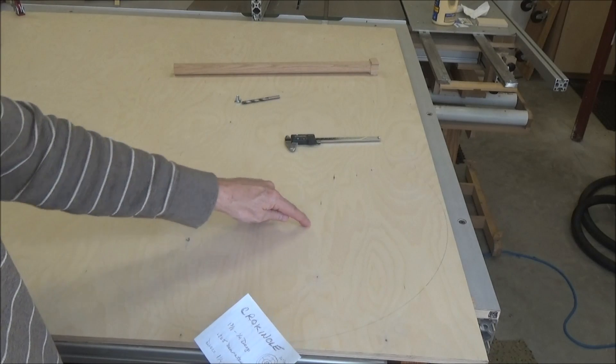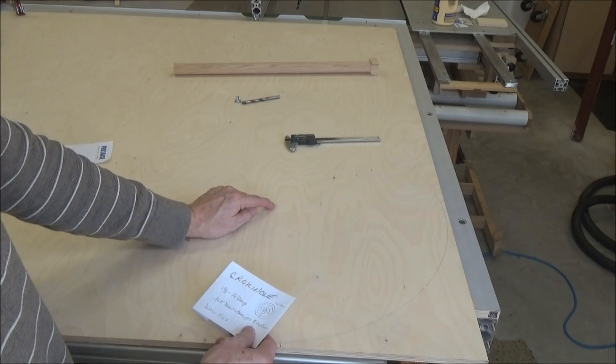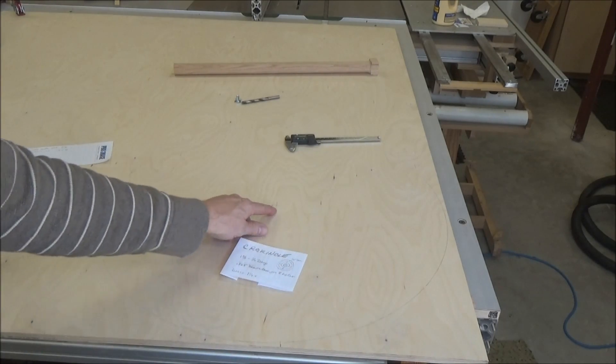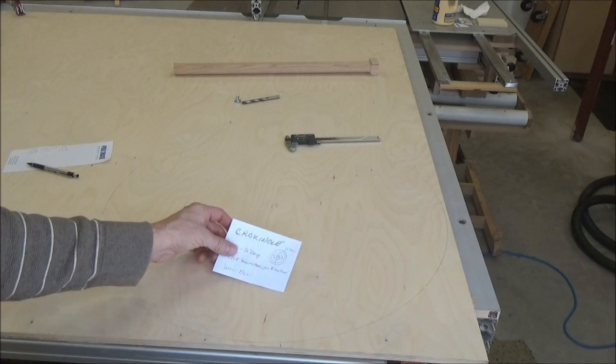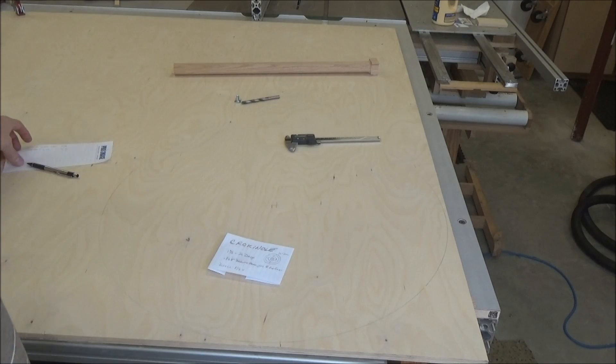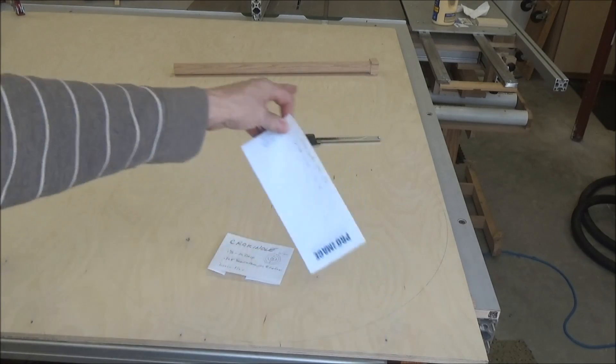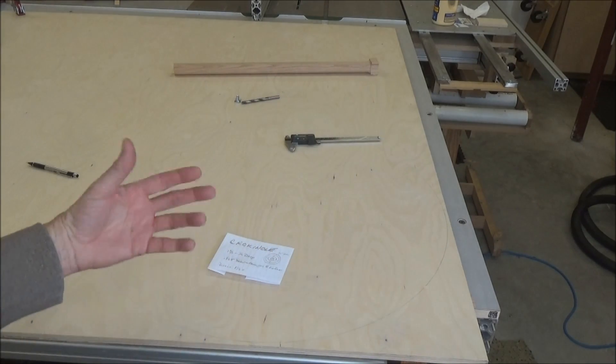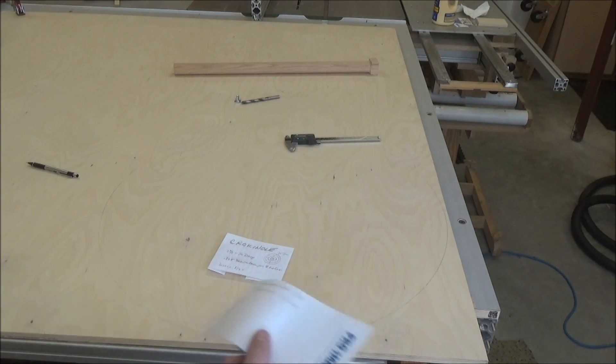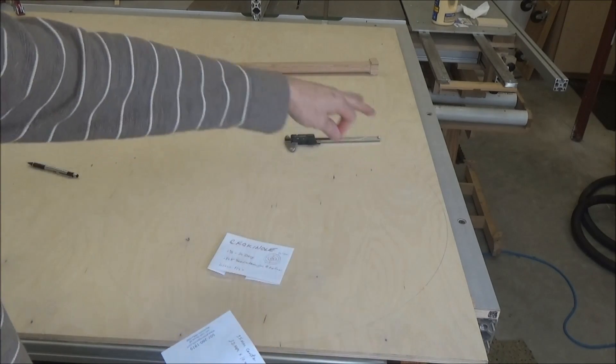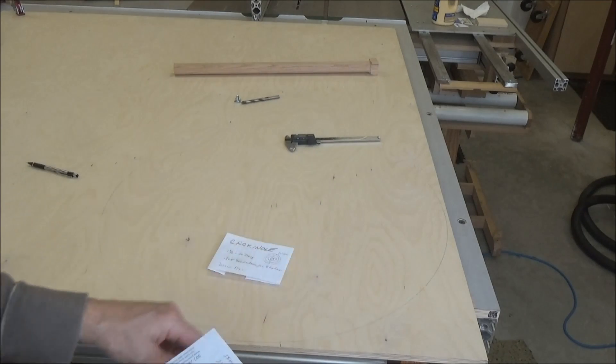You have a center hole that's an inch and three-eighths diameter and a quarter inch deep. The discs are from a game originally designed in the 1870s in Canada, and the dimensions are in metric.